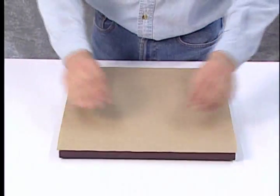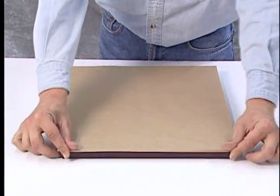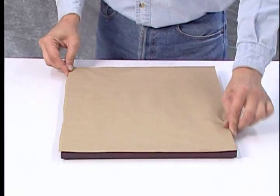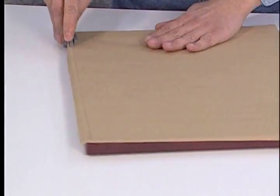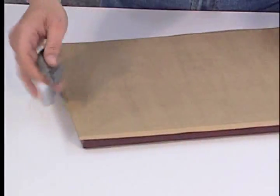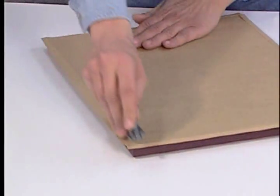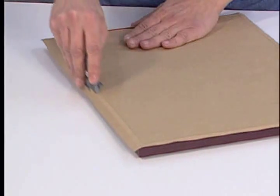Now flip the frame over again and crease the overhanging paper that remains. Finally, use an edge trimming knife or a craft knife with a straight edge to trim the paper back past the edge of the frame by approximately one-eighth of an inch.